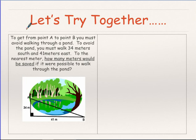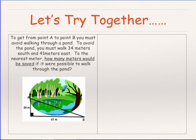We have a picture, so all we need to do is highlight the question. It says: to get from point A to point B you must avoid walking through a pond. To avoid the pond you must walk 34 meters south and then 41 meters east. To the nearest meter, how many meters would be saved if it were possible to walk through the pond? Step one: highlight the question.